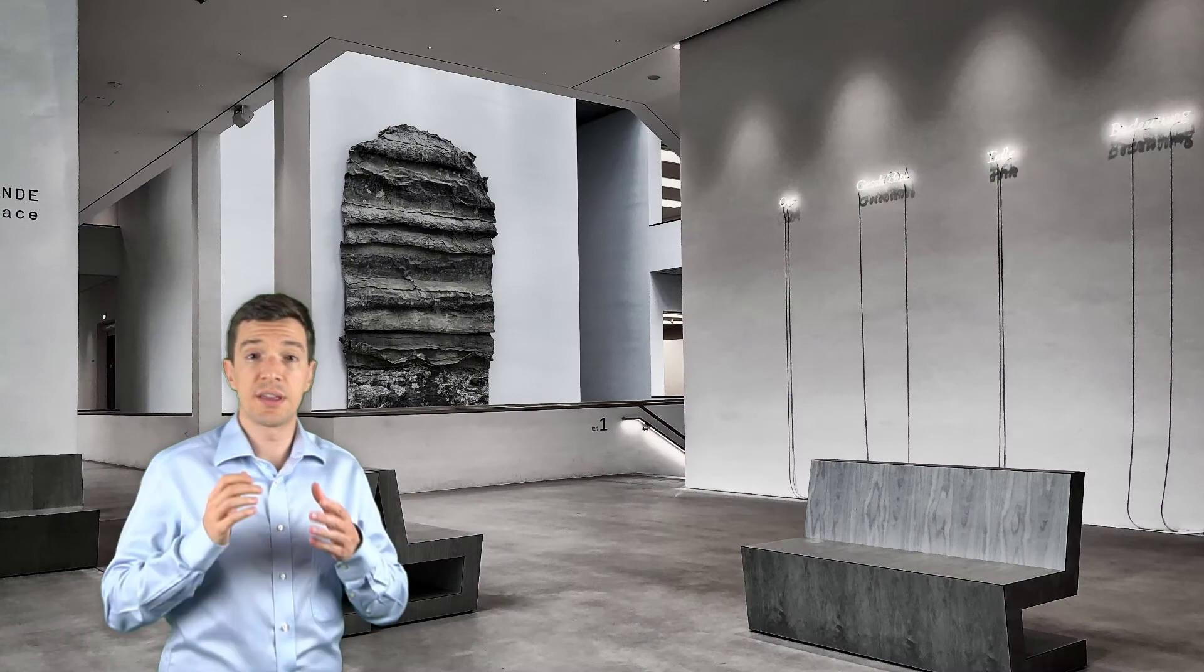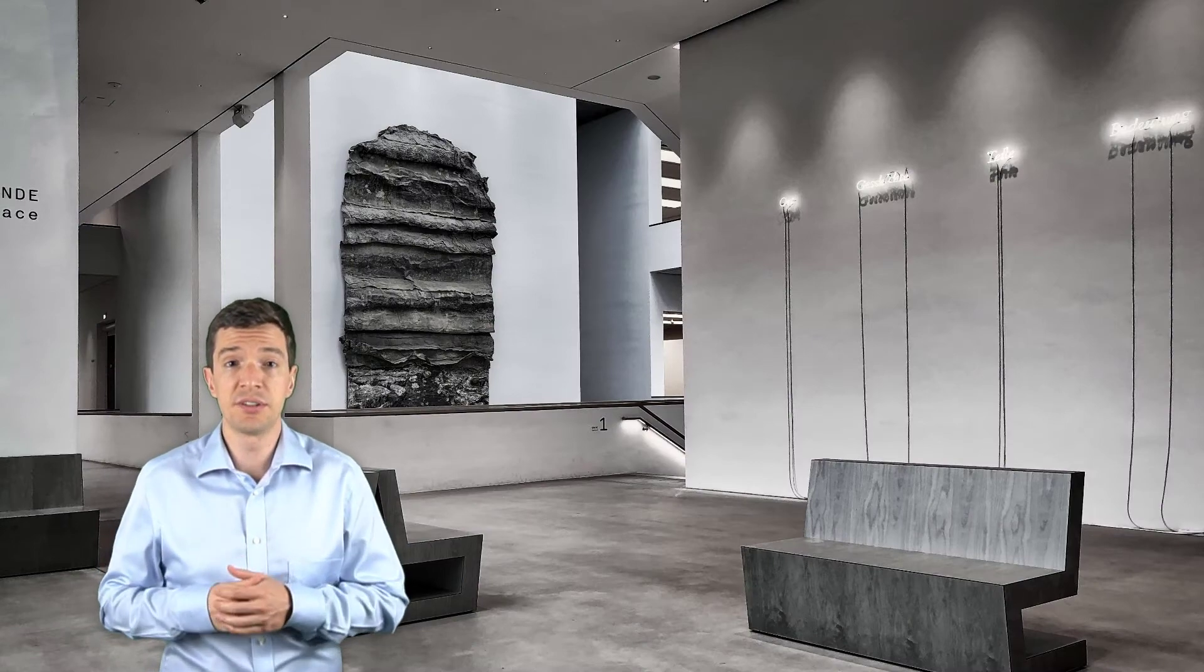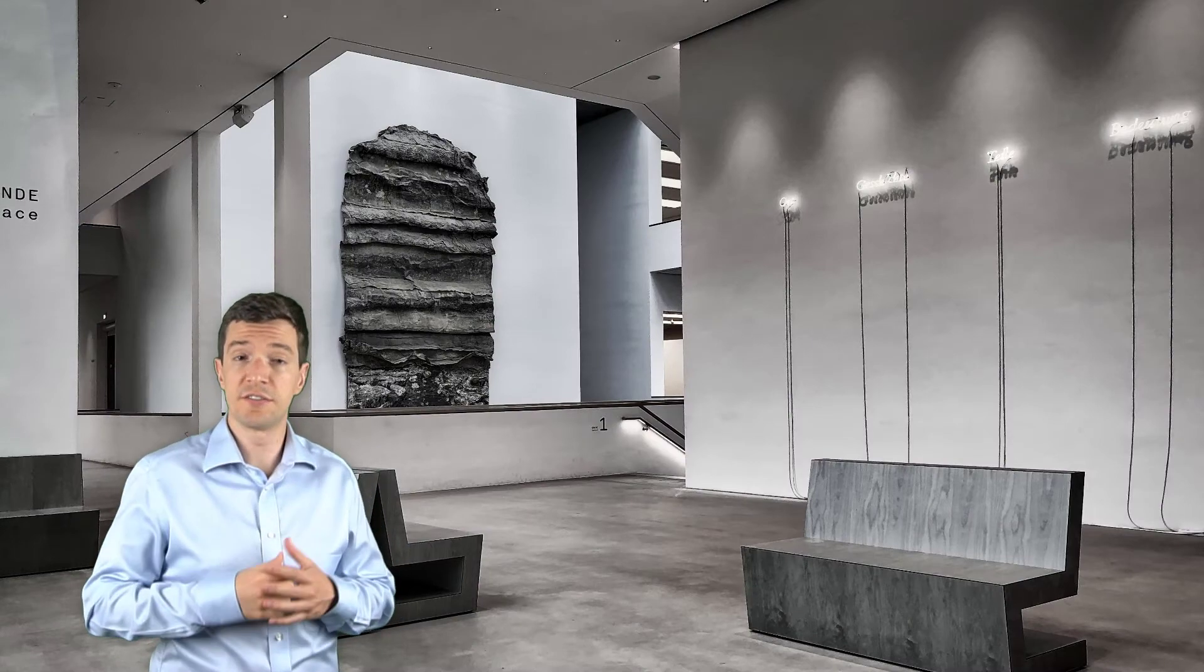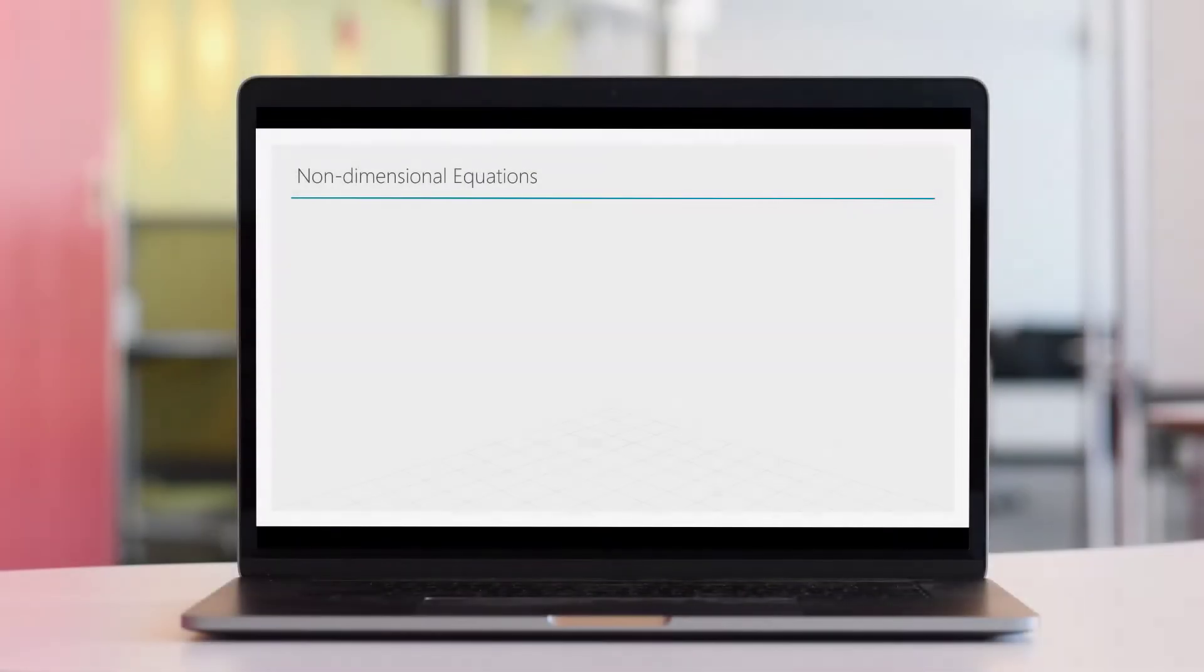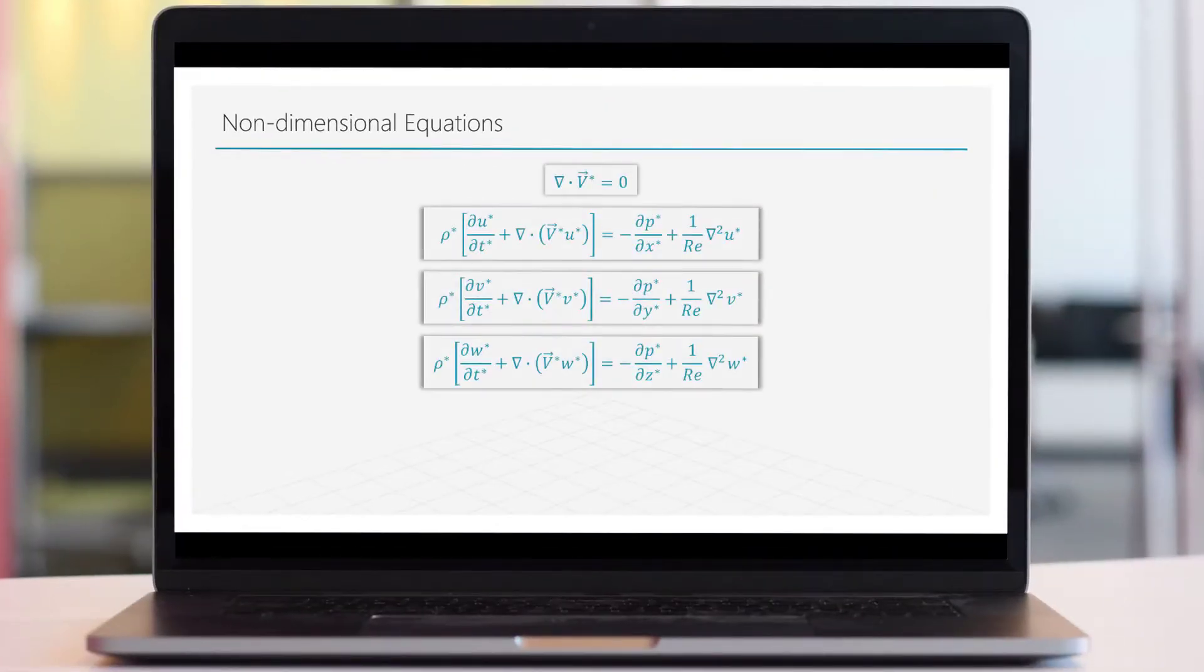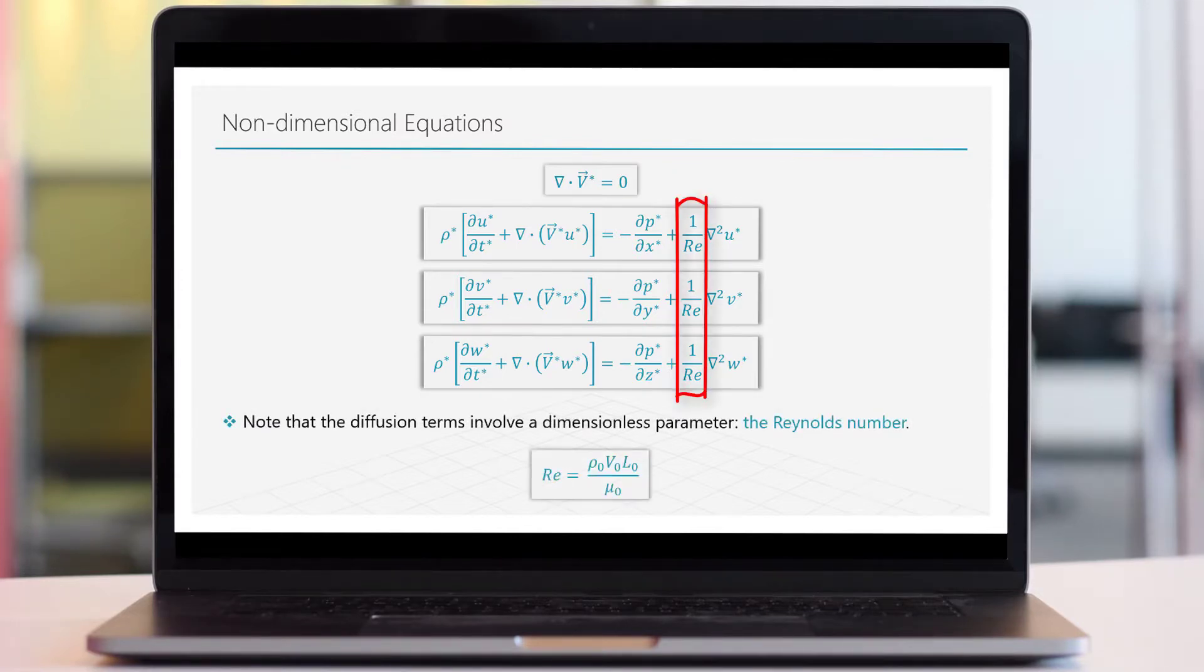Going through each equation and substituting the non-dimensional terms we just defined, we can recast the equations in their non-dimensional form. Reported here are the mass equations and the three moment equations. As you can see, they look similar to their dimensional form, with the only difference that in the viscous terms we have this term that is the first non-dimensional parameter, the Reynolds number.